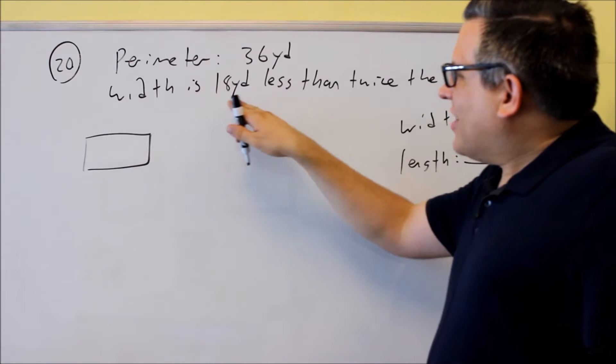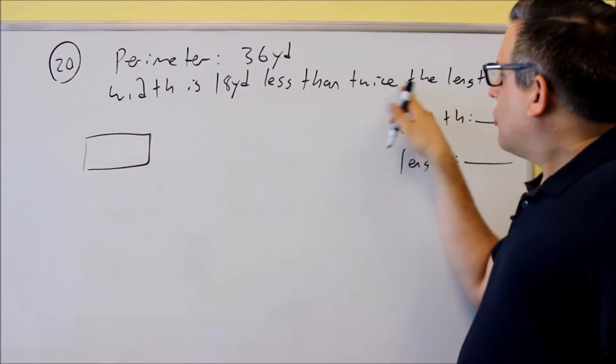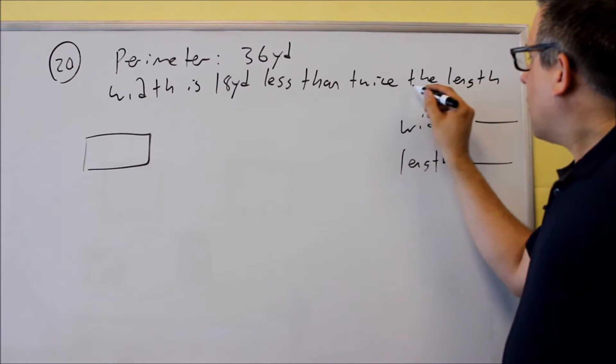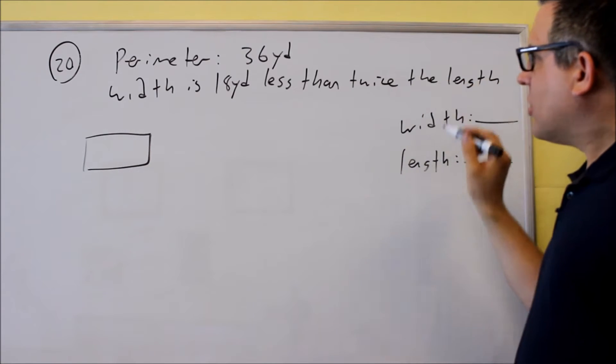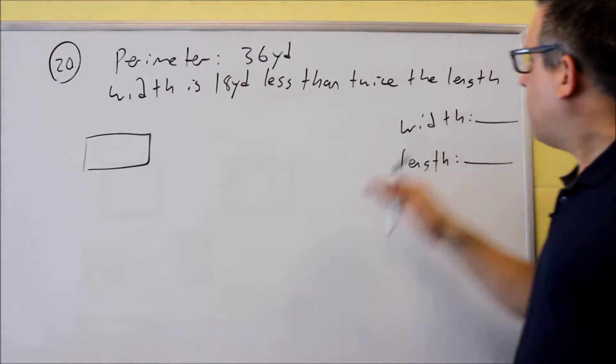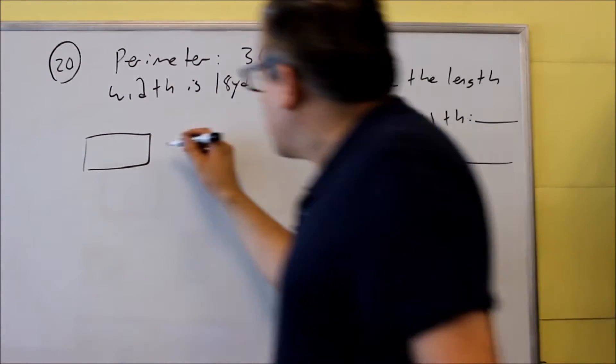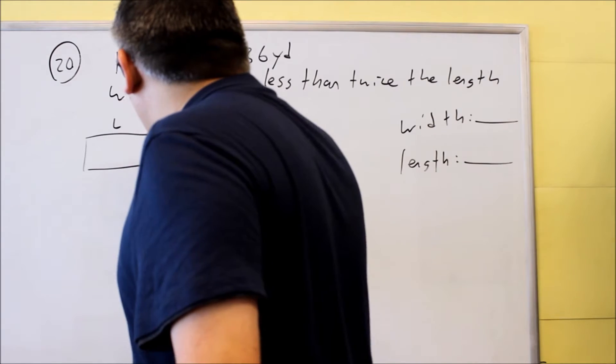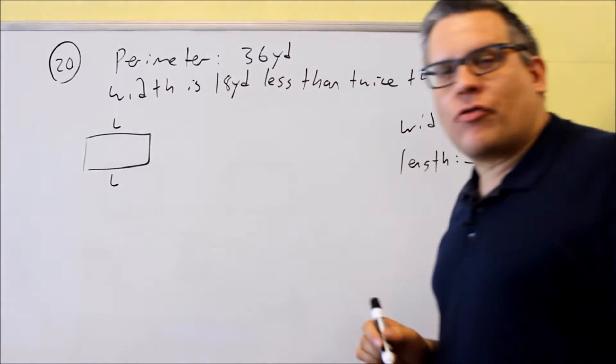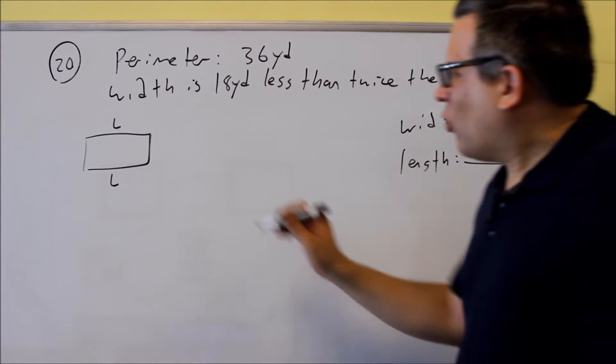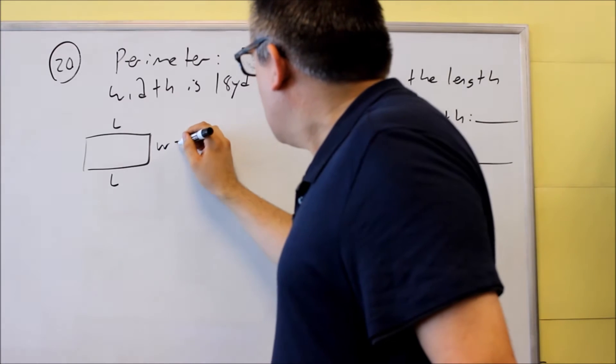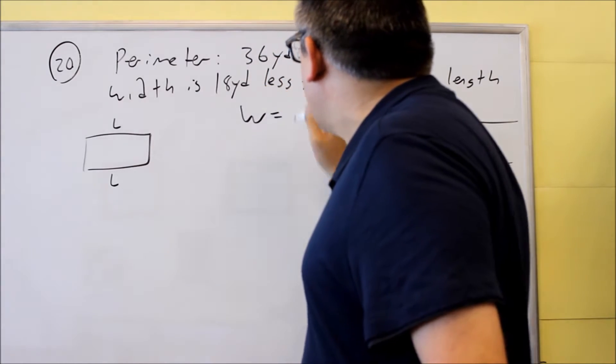Now, it says the width is 18 yards less than twice the length. This part right here, the width depends on the length. So what I'm going to do is put length here, L for length. And the width, I'm going to put that here instead.